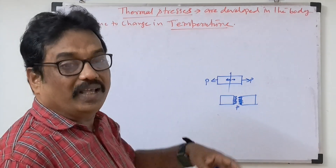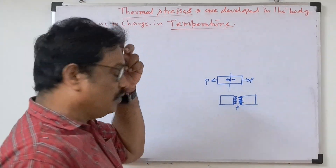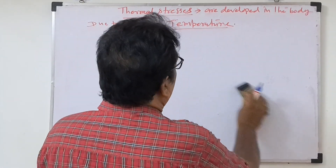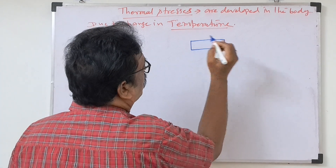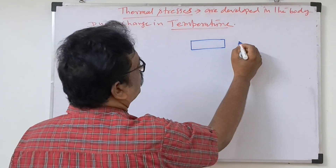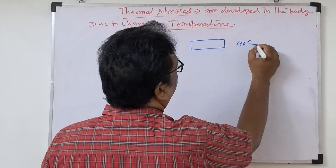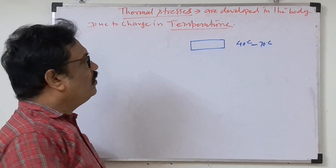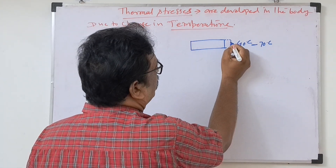Stress will develop due to heat. If you heat the body, expansion or contraction will come according to the condition. Suppose one bar is taken. We will heat this. Suppose the beginning temperature is 40 degrees Celsius and we increase it up to 70 degrees Celsius. What will happen? Elongations will take place — length will increase.